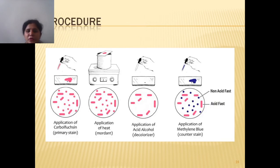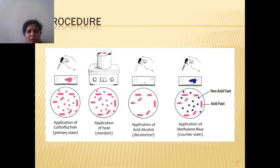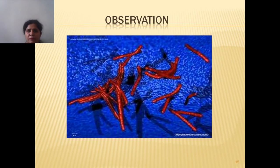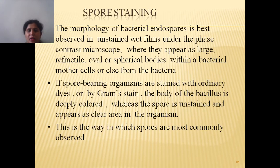Here is the procedure flowchart for acid-fast staining: first, application of the primary stain carbol fuchsin; then application of heat, which acts as a mordant to penetrate carbol fuchsin within the cell wall; then application of acid alcohol, which acts as a decolorizer; and finally application of the counter stain methylene blue. Under the microscopic field, if you see red-colored bacteria, they are acid-fast as they contain mycolic acid within their cell wall.